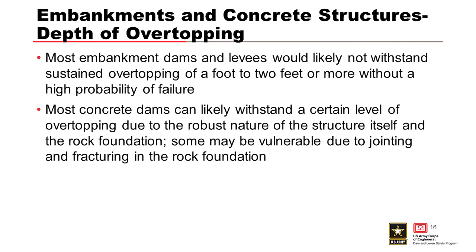Overtopping depth and duration and type of structure are the critical factors to evaluating this potential failure mode. Rainbow Dam failed after being overtopped for 14 hours with a max depth of 1.5 to 2 feet, while Gibson Dam had overtopping of 3 feet over a parapet wall for 20 hours but didn't fail. We'll talk about the embankment processes and event trees for simple situations as well as concrete dams.